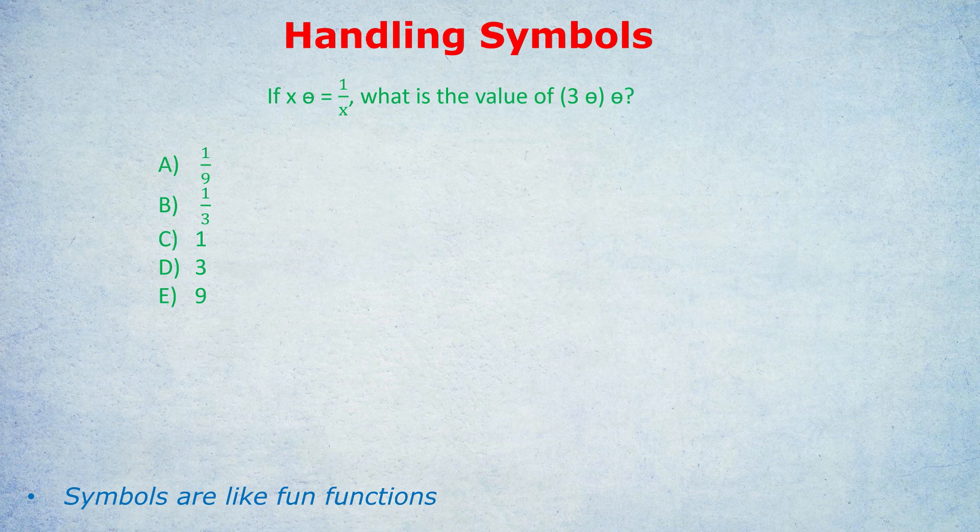Let me demonstrate with three examples in ascending order of difficulty. The first question says: if x symbol equals one over x, what is the value of (3 symbol) symbol? Very important to notice there are two symbols. Let's break this down. x symbol equals one over x.